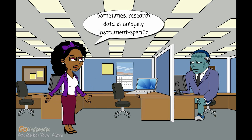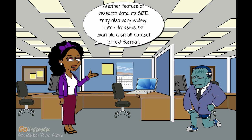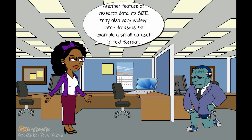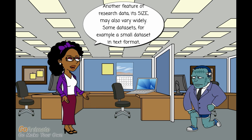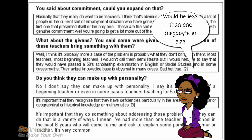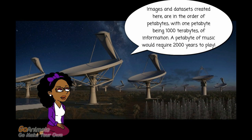Sometimes research data is uniquely instrument specific. An example of this is the data generated by the Olympus Confocal Microscope. Another feature of research data is its size, which may also vary widely. Some data sets, for example a small data set in text format, would be less than 1 megabyte in size. At the opposite end of the size spectrum we find huge data sets, such as those generated by the Square Kilometer Array Telescope, which are in the order of petabytes — with 1 petabyte being 1000 terabytes of information. A petabyte of music would require 2000 years to play.